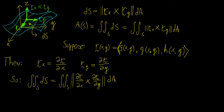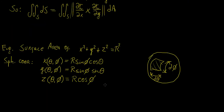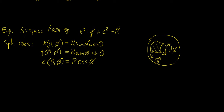Now we'll work through an example: finding the surface area of a sphere with constant radius R. Since a sphere is more conveniently described in spherical coordinates, and r is constant here, we can reduce the three spherical coordinate variables down to functions of just two variables.